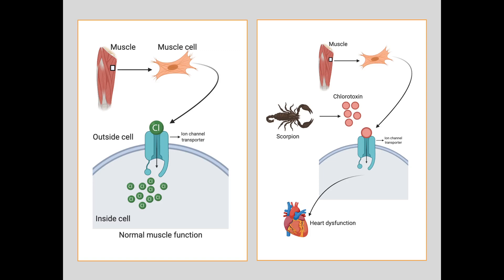In the presence of chlorotoxin released by the venom of a scorpion, these chlorotoxin proteins bind on the ion channel transporters and block the movement of chloride ions from outside the cell to inside the cells. The absence of chloride ions inside the cell provides rigidity to the muscles.